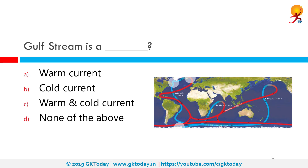The Gulf Stream is an example of a warm current. Warm ocean currents flow away from the equatorial region on the western side of the ocean basins. The Gulf Stream in the North Atlantic and the Kuroshio current in the North Pacific are examples of warm currents. Of all the warm currents, the Gulf Stream has been studied most extensively.